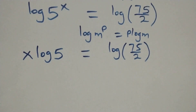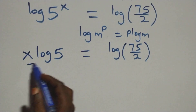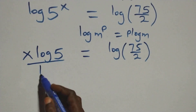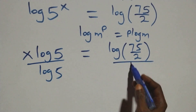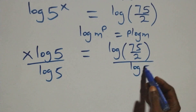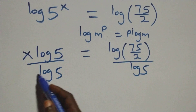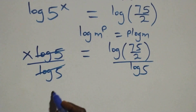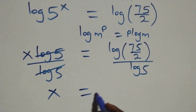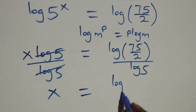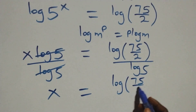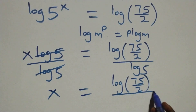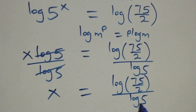From here we divide both sides by log 5. The log 5 on the left cancels, and we have x equals log(75/2) divided by log 5.